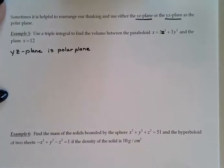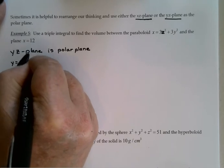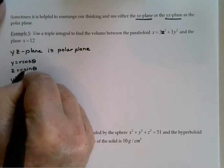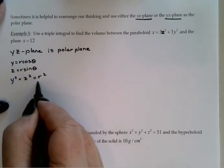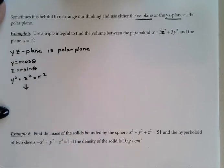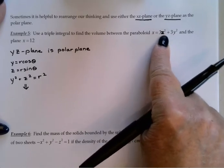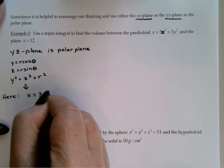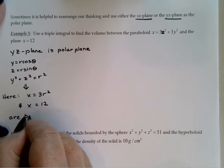That means that all of the conversion equations that normally apply to x and y now apply to y and z instead. For example, y would be r cosine theta and z would be r sine theta. And y-squared plus z-squared would equal r-squared. This is actually the one I'm going to use right here because what that's going to allow me to do is say x, then, is just 3r-squared. And then I also had x equal 12. And I can use those as my boundaries.